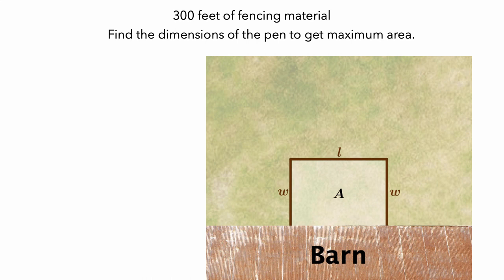We'll do this by creating an algebraic model for the area of the pen. Let's write down a formula for what we're trying to maximize and a formula for what's constraining us. We're trying to maximize the area of the pen, which is the length times the width. We're constrained by the amount of fencing material — we have 300 feet total, which is the perimeter of the pen: L plus 2W.